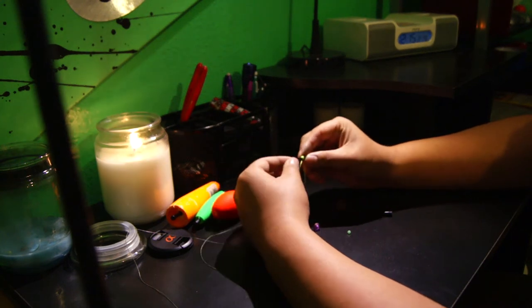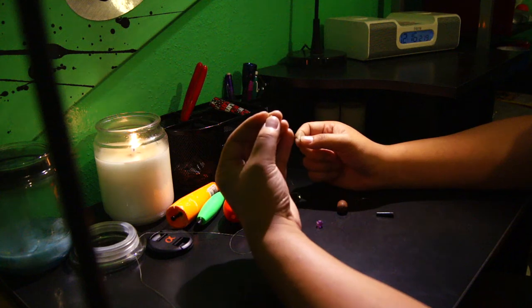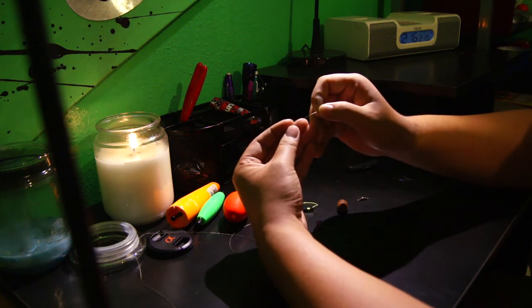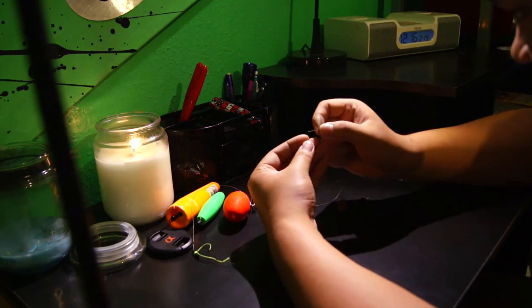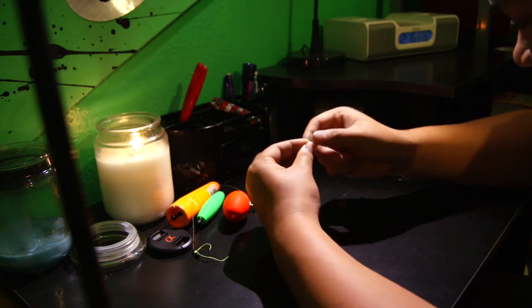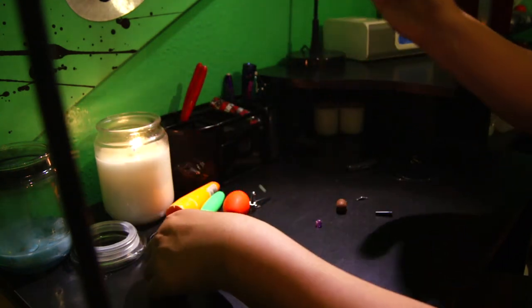You put this in first. Put the bobber stop in first and then come with these little green beads that have a smaller hole than the regular beads. You slide that in next.